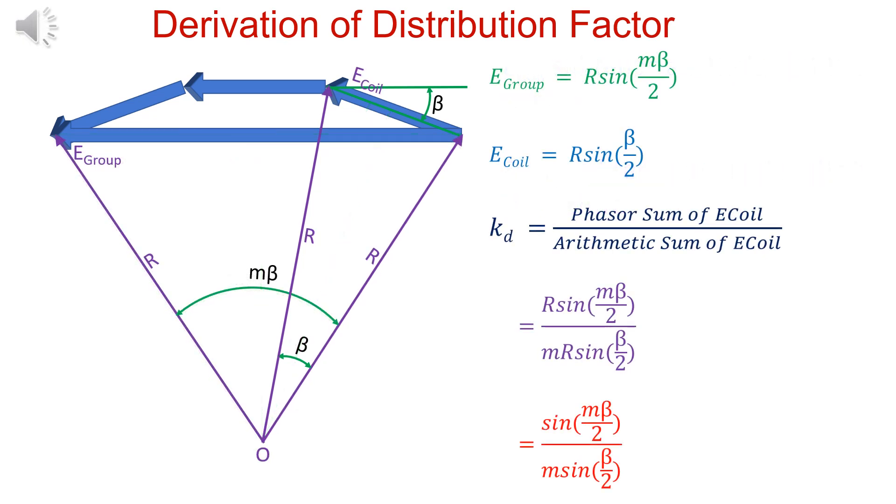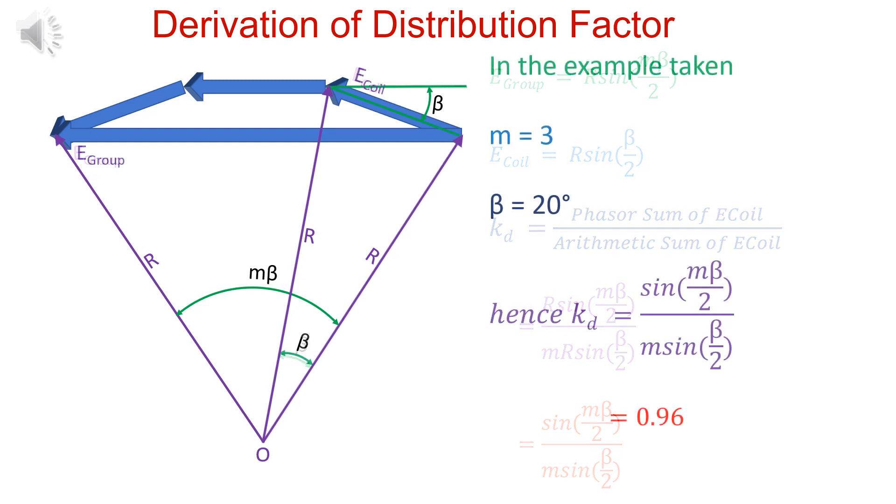As seen, distribution factor KD is equal to sin M beta by 2 divided by M sin beta by 2. In the example taken, number of coils in a group are 3 and beta equals to 20 degrees. Substituting these values, we get KD equals to 0.96.